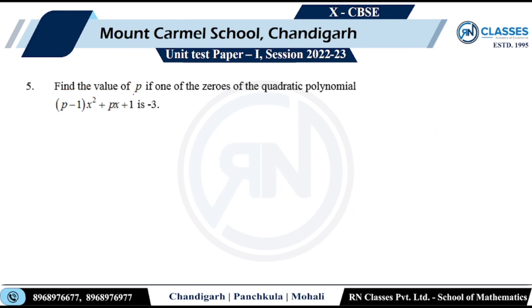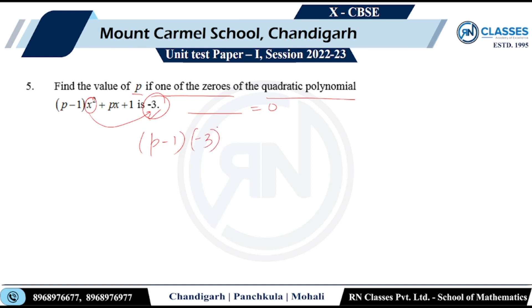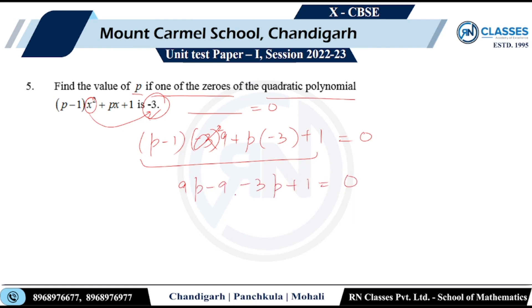He says find the value of p if one of the zeros of the quadratic polynomial is minus 3. If the zero is minus 3, replacing x with minus 3 makes the polynomial equal to zero. So (p-1)(-3)² + p(-3) + 1 = 0. This gives 9p minus 9 minus 3p plus 1 equals 0, so 6p minus 8 equals 0, and p equals 4/3.